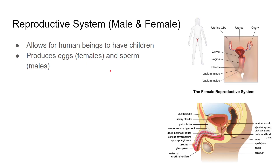And then finally, your reproductive system. Your reproductive system is what allows for human beings to have children. In females, it makes sure that your eggs stay fertilized, and in males, it makes sure that sperm stays alive and can go and fertilize the female. Males produce sperm and females produce eggs.